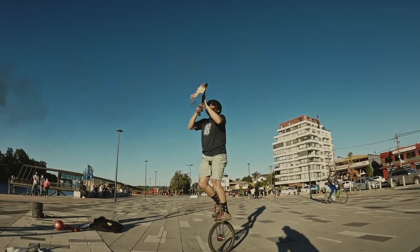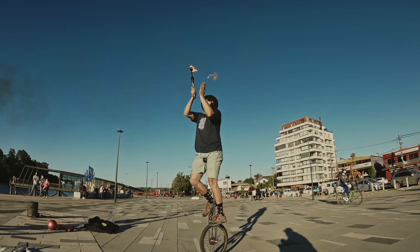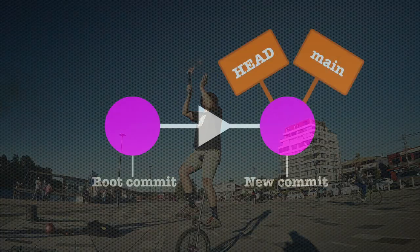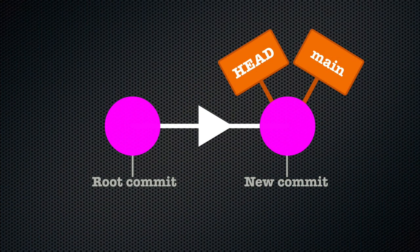Note that we already have a branch — everything needs to be on some branch. So Git starts us off with a default branch, which is called main. On this default branch, we have made two commits so far.